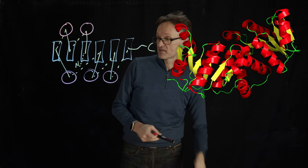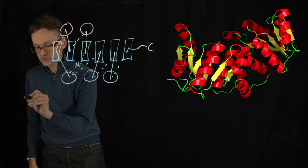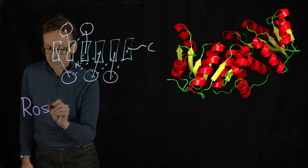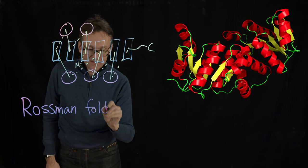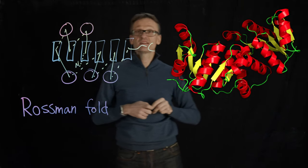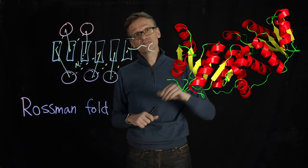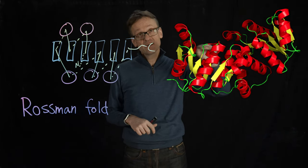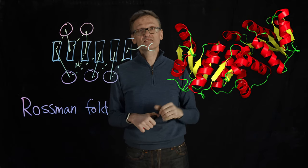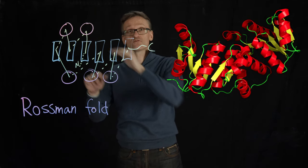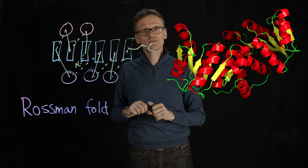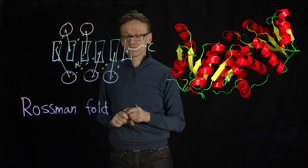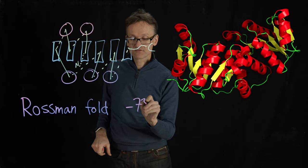This has a special name. This is a so-called Rossman fold. It is very efficient at binding nucleotides. In particular, that has to do with this pattern of the edge of a beta sheet, and in particular in this case we have two hydrophobic regions on both sides of the sheet between that and the corresponding alpha helices. This was discovered by Michael Rossman in 1973.